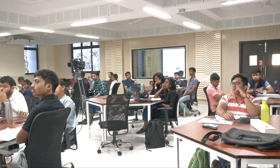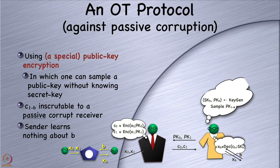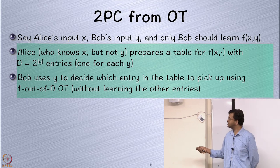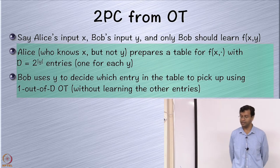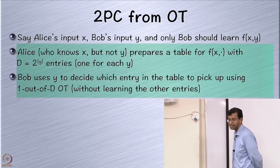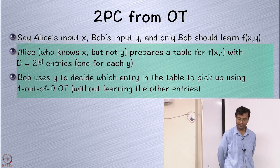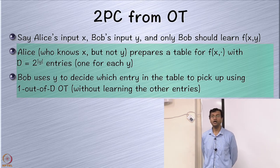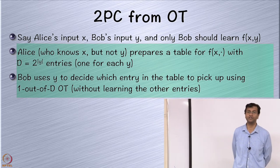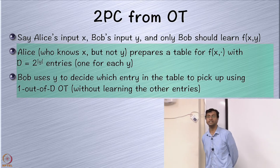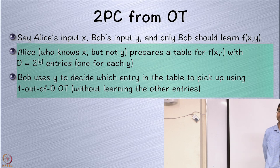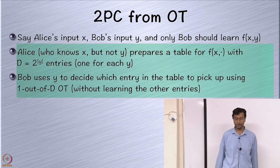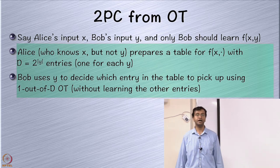Now, how do you get 2PC — secure two-party computation — from oblivious transfer? Oblivious transfer itself was an instance of 2PC for a very specific functionality. But now I'd like to use it to have a secure protocol for an arbitrary function evaluation. Alice has x, Bob has y, and Bob wants to learn f(x, y).